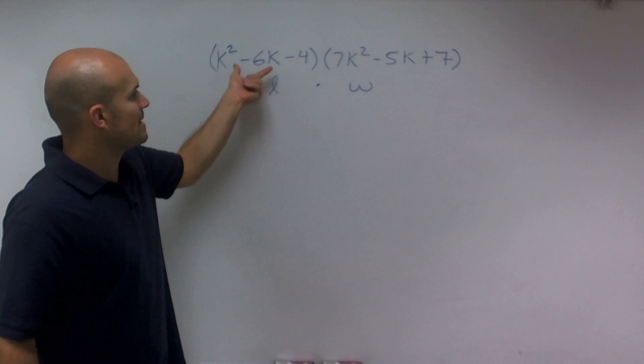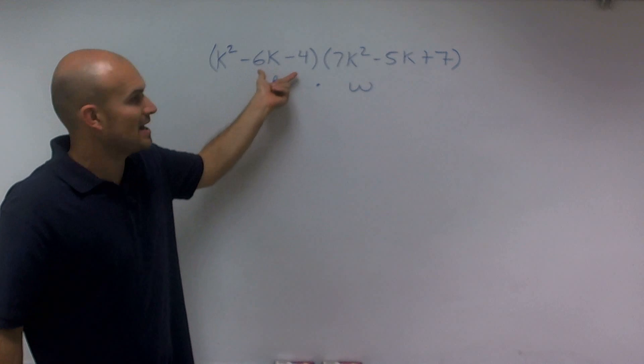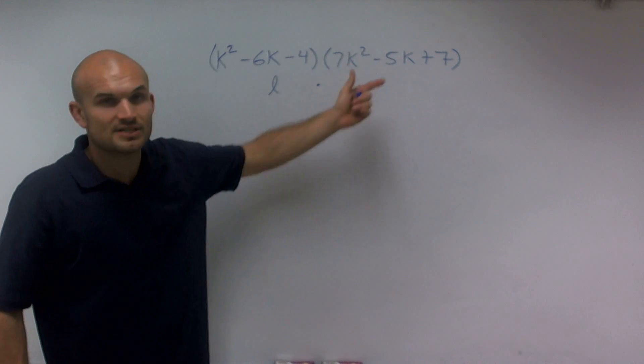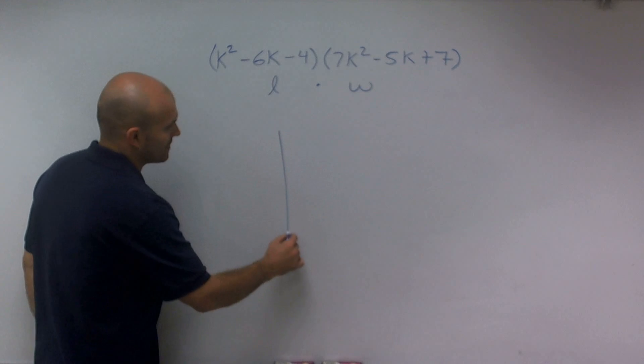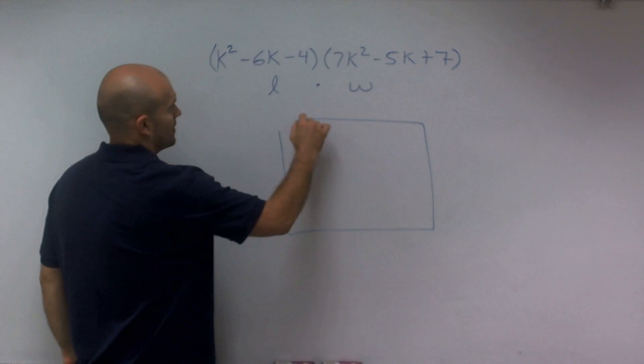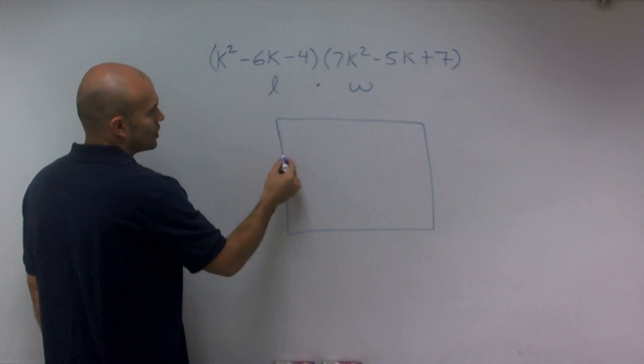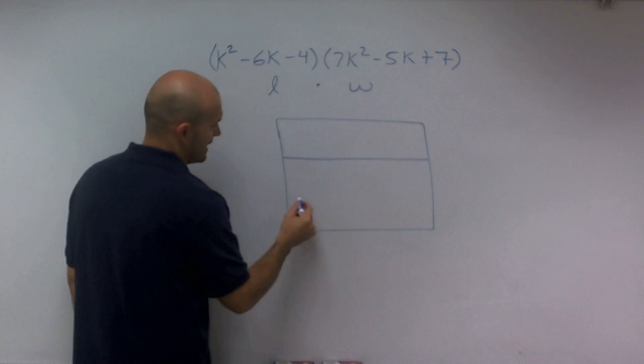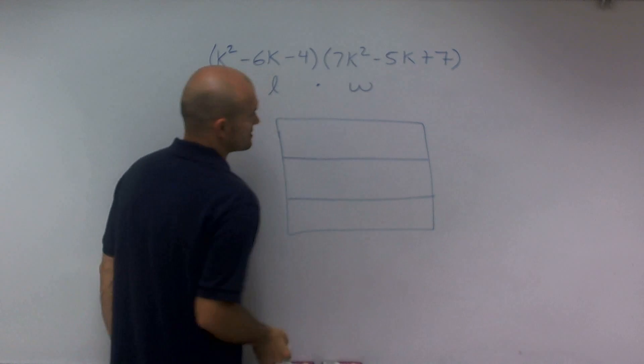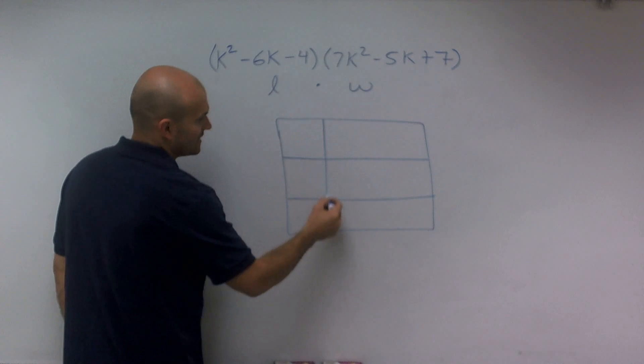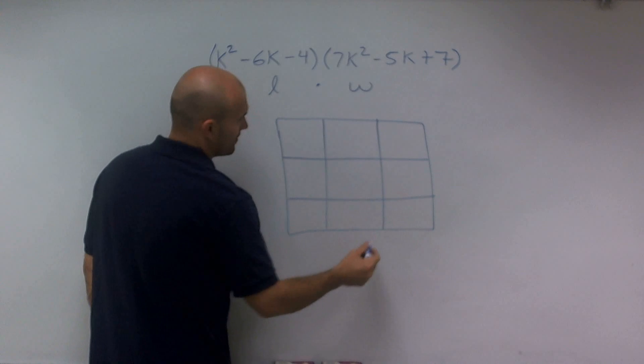So think about now my length is going to be this trinomial and this trinomial, so I'm going to need a pretty big rectangle. Since my length has three terms, I'm going to break up my length into three different sections. Since my width has three terms, I'm going to break that up into three sections.